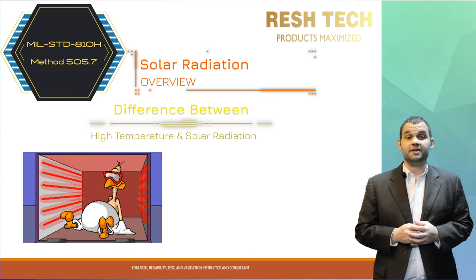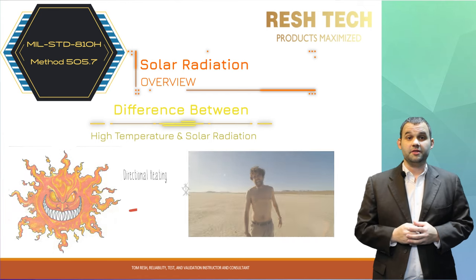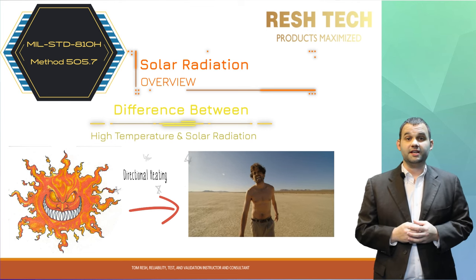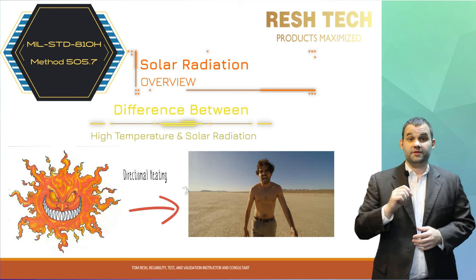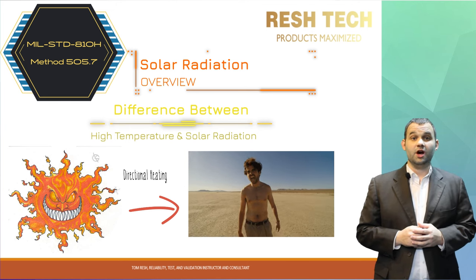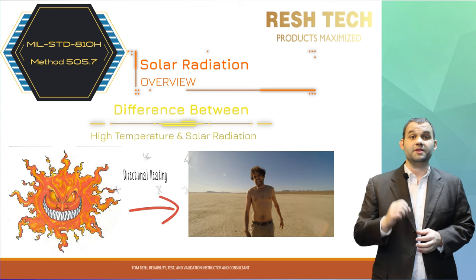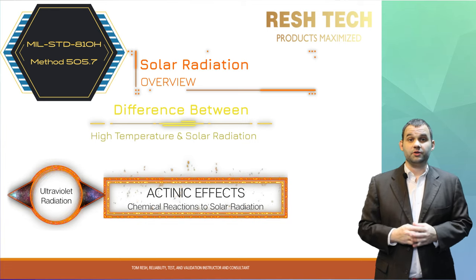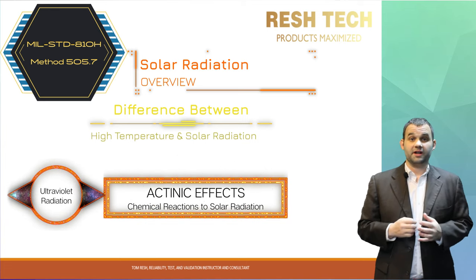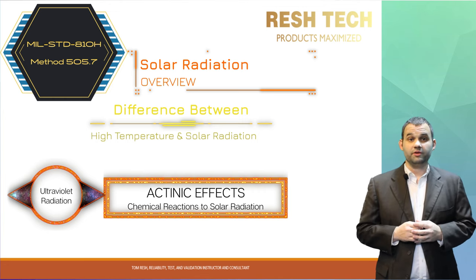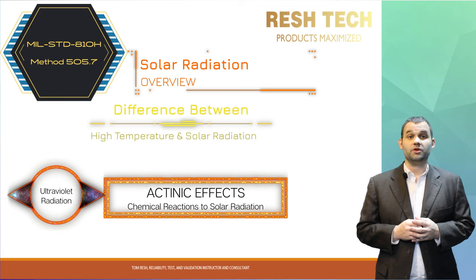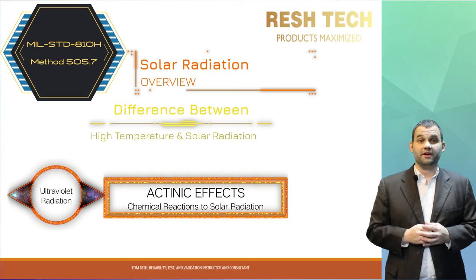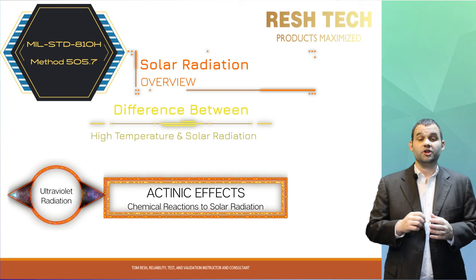Solar radiation, on the other hand, causes directional heating and thermal gradients. The surfaces of the system directly exposed to sunlight will be the warmest regions, and the amount of heat absorbed depends on the reflective and solar absorptive properties of the material. Another component of solar radiation is ultraviolet radiation, which can produce actinic effects — chemical reactions that occur when materials or fluids interact with UV radiation. UV radiation can wreak havoc on materials and seals, so consider UV radiation based on your system's mission profile and also when designing your system and selecting materials.